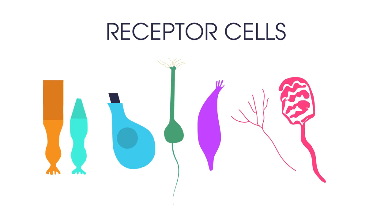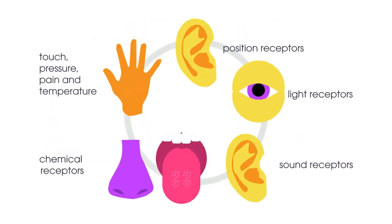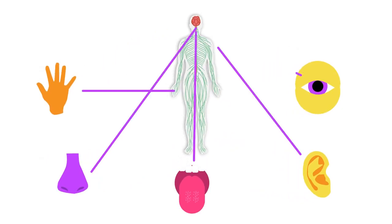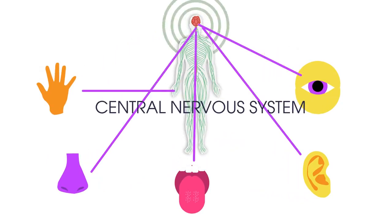Can you name some human sense organs and what they detect? When the receptor cells of the sense organ are stimulated, they relay this information along nerve cells or neurons to the central nervous system.